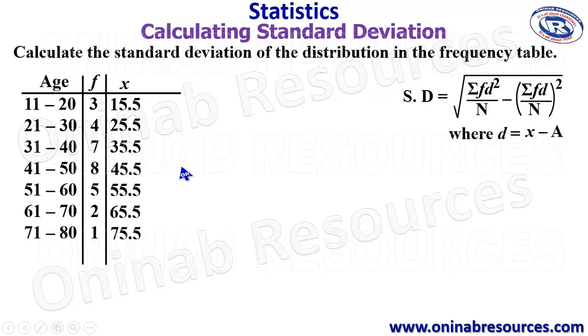The next is to find our x minus a. So we create another column for d, which is x minus a. Then our choice of a must be within the range of the class intervals. You are expected to pick the assumed mean from the central values. I want to pick 45 for easier calculation. So I'm going to use an assumed mean of 45.